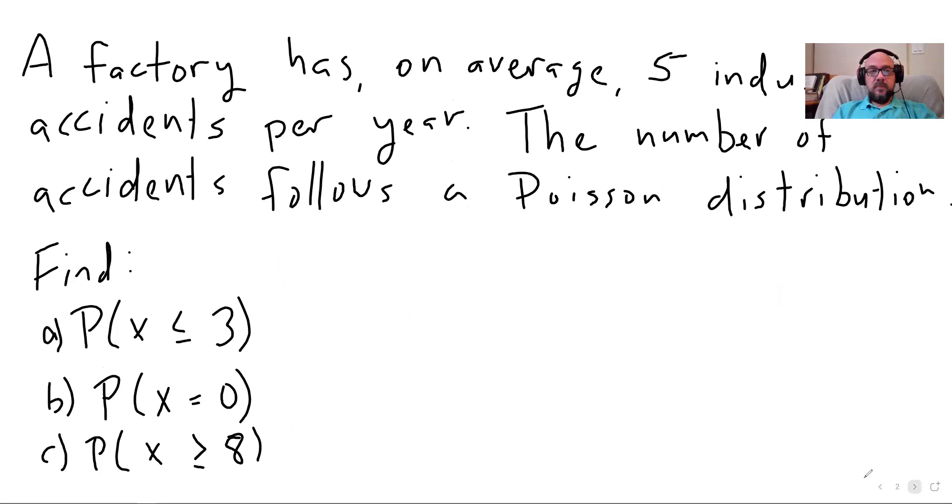All right. Anyway, here we go. We got a factory and it has on average five industrial accidents per year. So the number of accidents follows a Poisson distribution. So in other words, if we took the number of accidents in like, let's say 50 years at this factory, which probably the number changes over time, but let's say 50 years, they have five per year. And we graphed the number and we said, all right, well, they had zero accidents three times. They had one accident eight times and they had two accidents 13 times. Right. And we just made a histogram out of like three, eight, 13. That's what the Poisson distribution is.